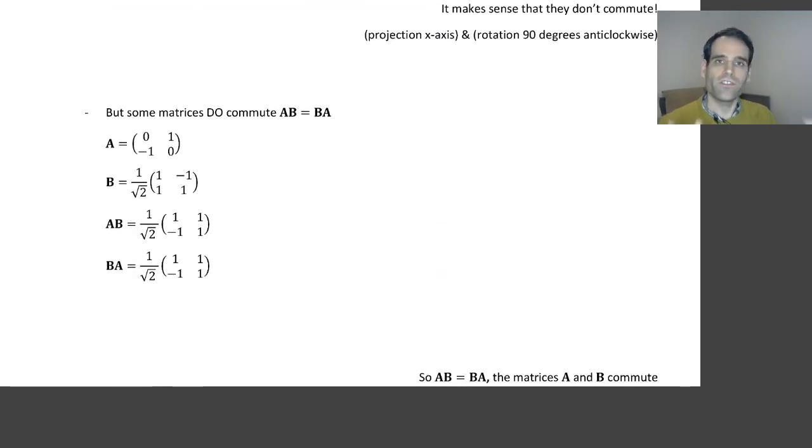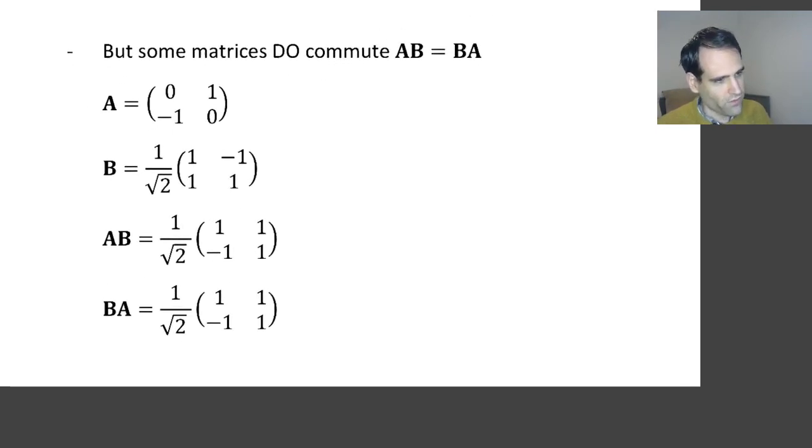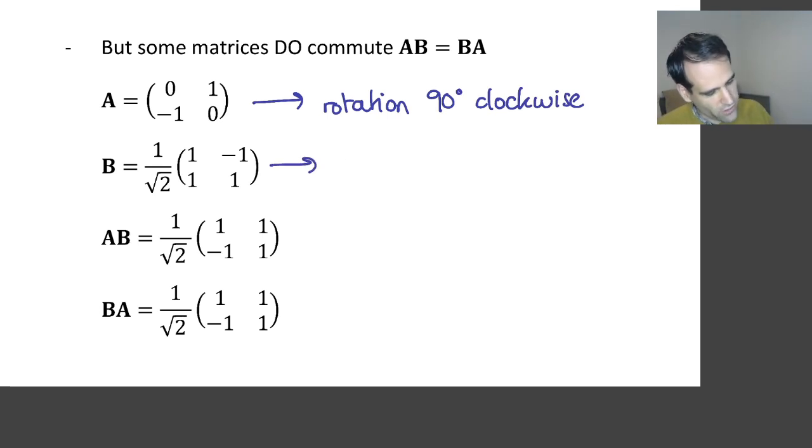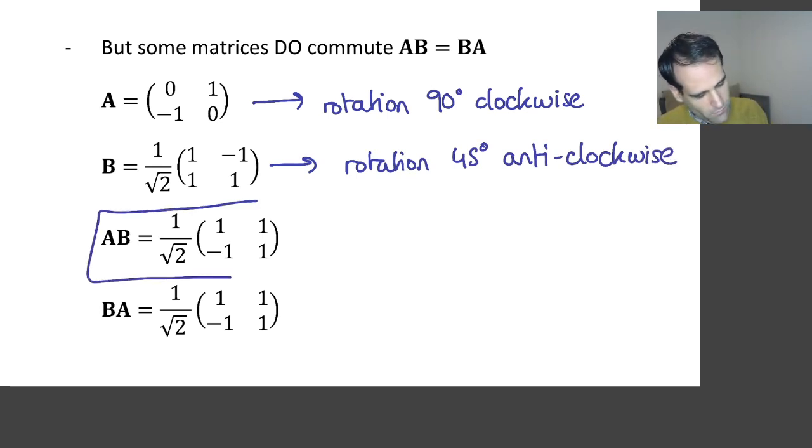However, some matrices do commute with each other. So it's not a general property but some matrices do. And this is the case for this example here. So in this example we have a matrix A which actually represents a rotation 90 degrees clockwise. And then we have this matrix B which represents a rotation 45 degrees anticlockwise.